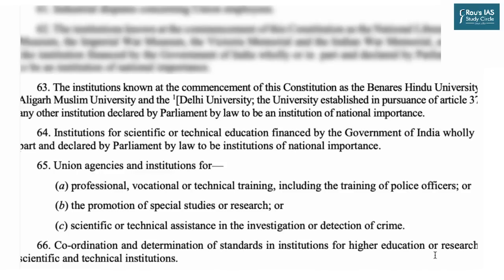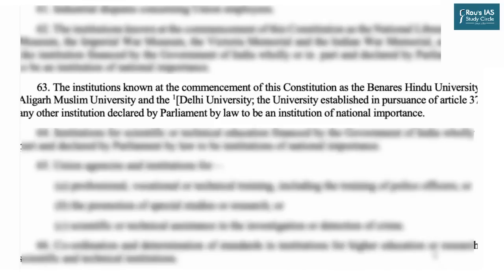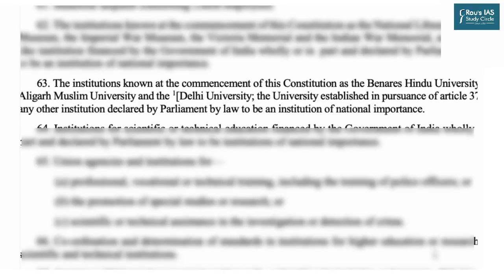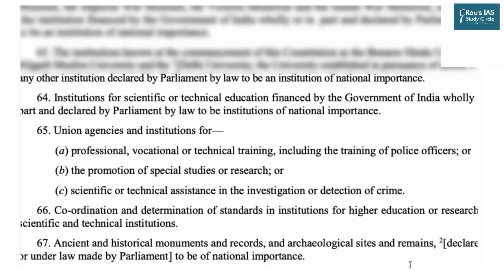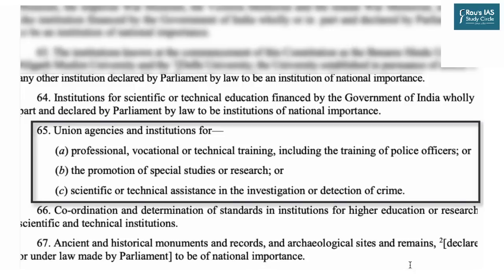Any institution declared by Parliament by law to be an institution of national importance comes under the center and is governed by List 1 of Schedule 7. Similarly, institutions for scientific or technical education financed by the Government of India — wholly or in part — and declared institutions of national importance, such as IITs, IIMs, Indian Institutes of Science Education and Research, NIDs, and Indian Institute of Science, all come under central institutions governed by the central government. Entry 65 talks about setting up agencies by the Union government for professional, vocational, or technical training.